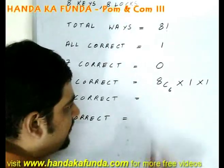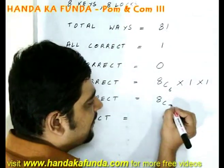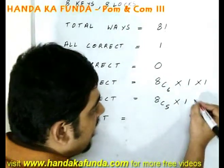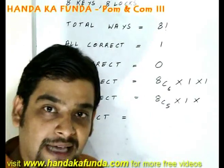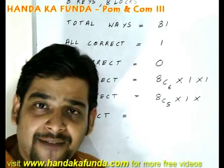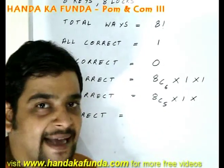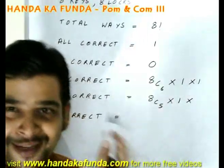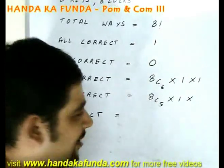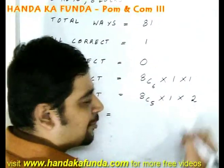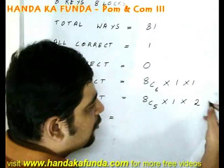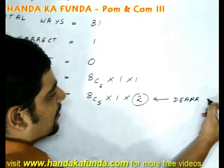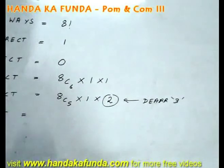How about 5 correct? 5 correct first of all I select the 5 keys which are correct. Then I put them in the right position in 1 way. Now I have 3 keys suppose K1, K2 and K3 and I have 3 locks left L1, L2 and L3. In how many ways can I put them such that all of them are wrong? This was the example that we did just now and we had found out that it could be done in 2 ways. This 2 has come from the derangement of 3 things as we saw in the previous example.